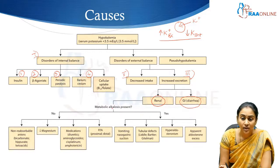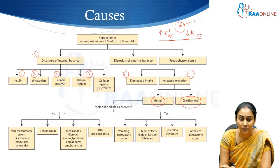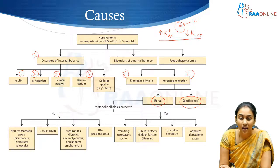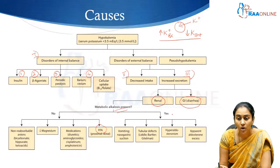When it comes to renal causes, the important question is whether the patient is acidotic or alkalotic, as that will point toward the etiology. If the patient has acidosis, most likely we are looking at renal tubular acidosis. If the patient has alkalosis, we are looking at defects causing hyperfunctioning of the renin-angiotensin-aldosterone system.